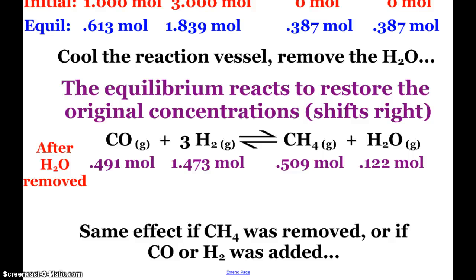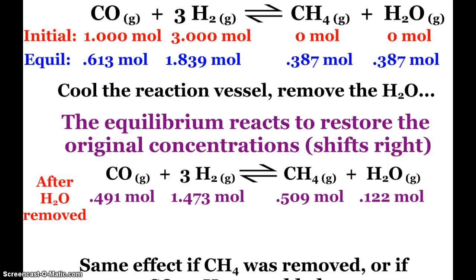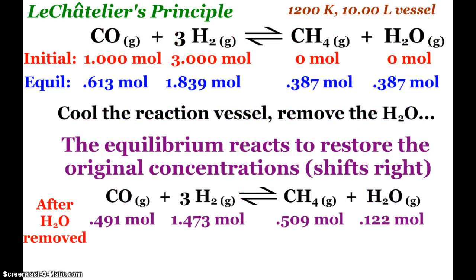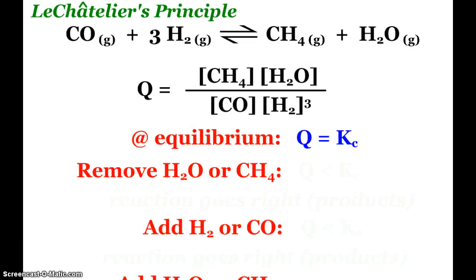But the same thing happens too if we add more reactants. Obviously, if I add more carbon monoxide or hydrogen, if I put more reactants in, I'm going to get more product out. So that's how we can affect this equilibrium by either removing products or adding reactants. That just kind of makes sense.